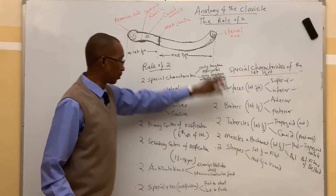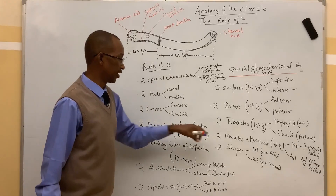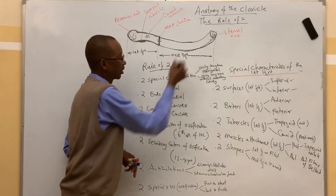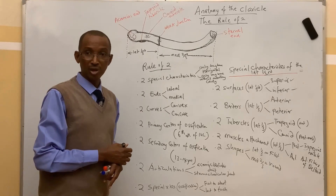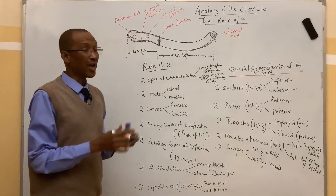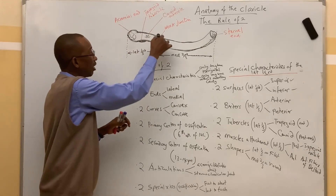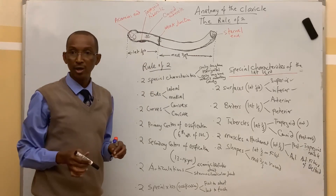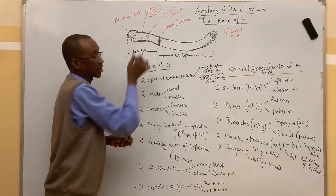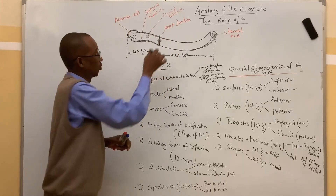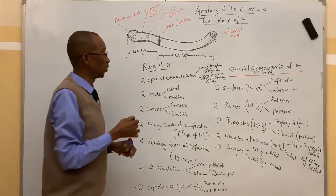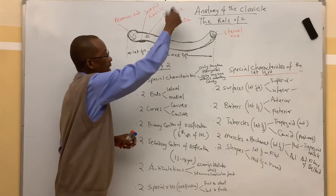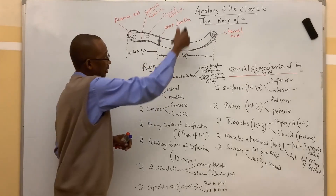The clavicle in general has two different shapes: the lateral one-third is flat and the middle two-thirds is round. Because of these two different shapes, there is an area of weakness at the junction between the lateral one-third and the middle two-thirds. This is a weak point where the flat aspect joins the round aspect, making the clavicle prone to fracture at that site. If a fracture occurs here, it can injure the neurovascular structures that pass from the neck across the posterior aspect of the middle two-thirds of the clavicle down to the axilla.